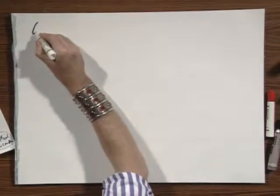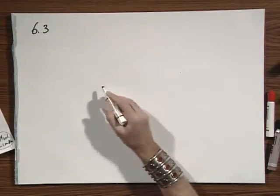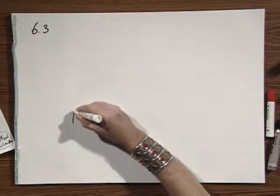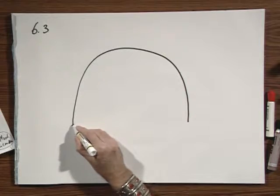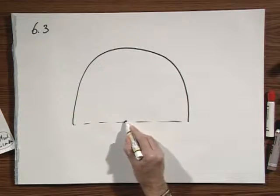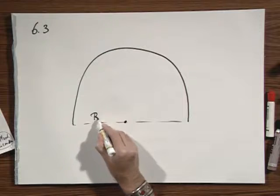And I now want to go to problem number 6-3, which is a real classic. A girl, Eskimo girl, is sliding off an igloo. It's like a sphere with a radius R.